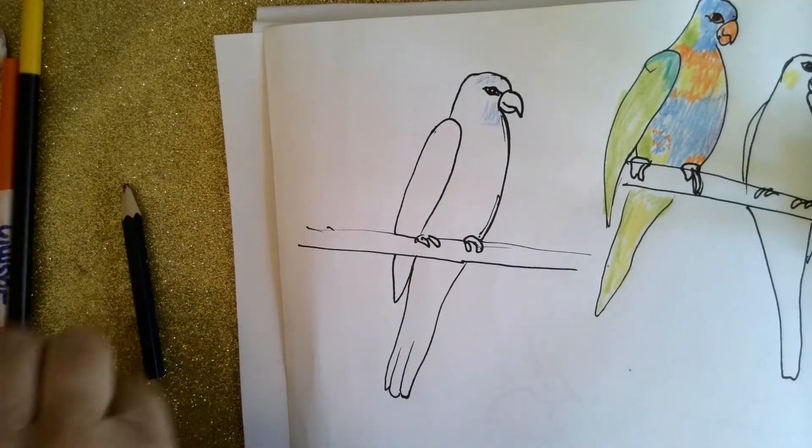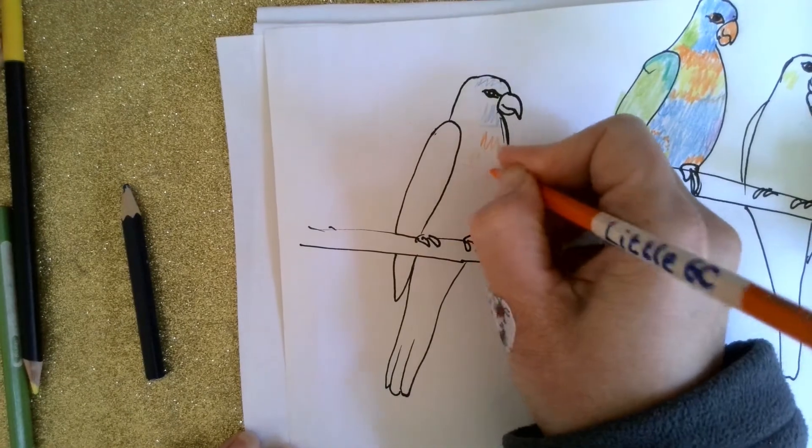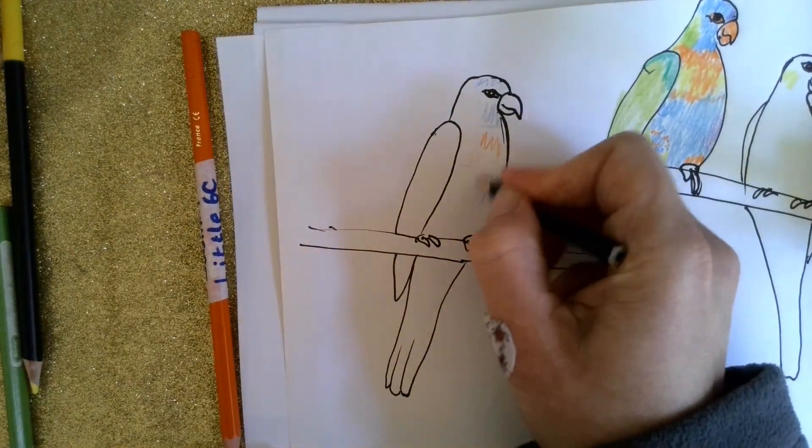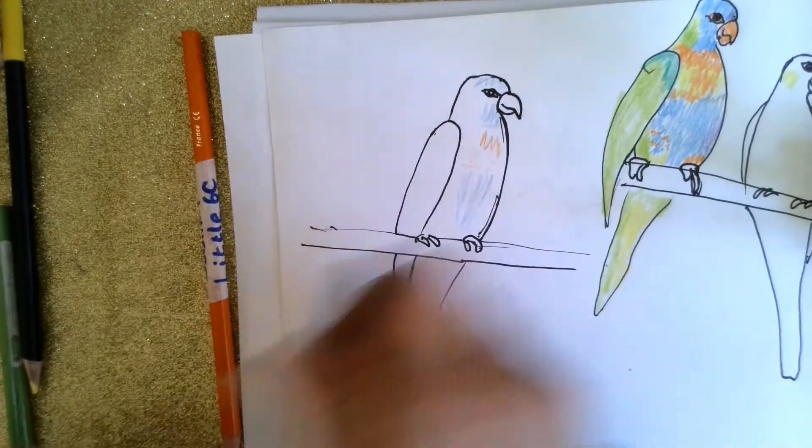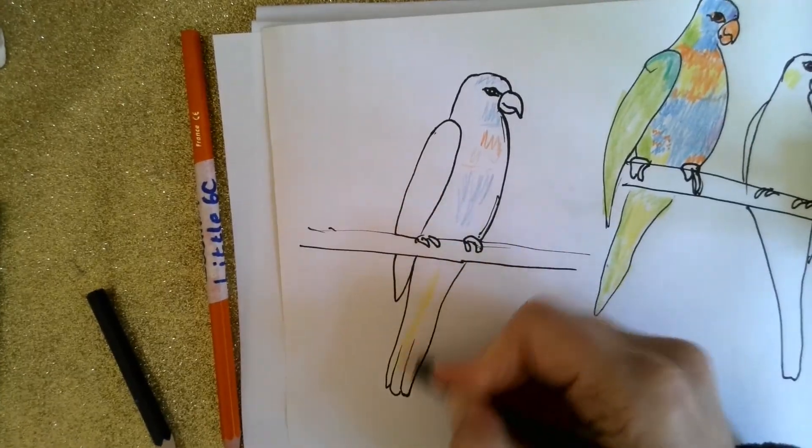You need orange and yellow in the chest, blue underneath that, yellow on this side of the tail.